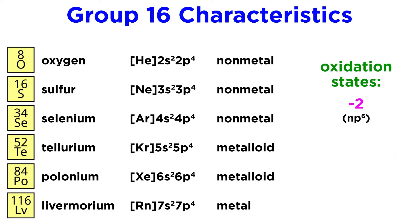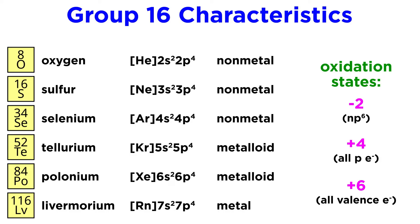With this group we finally see a strong tendency to complete the outermost shell of electrons, thus minus two oxidation states will be very common, along with the plus four and plus six that we would expect from utilization of all p electrons or all valence electrons.